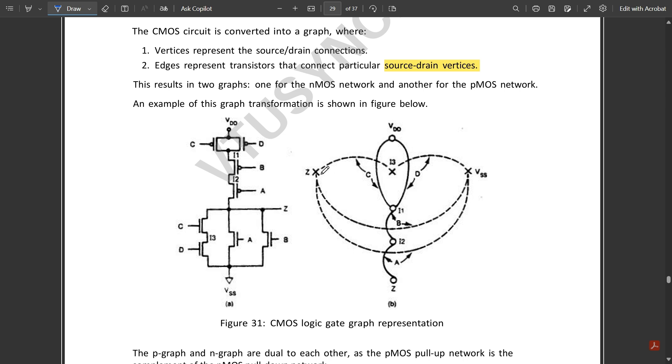For nMOS, they are represented in dotted lines. You see here A and B are in series, so from this point to this point they have connected these two lines in series until Z. Z is the point where we check the output.